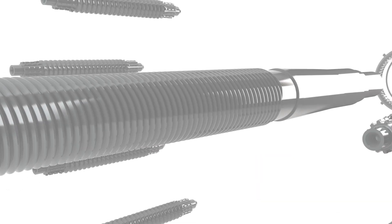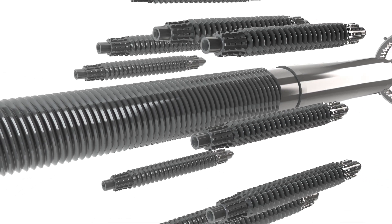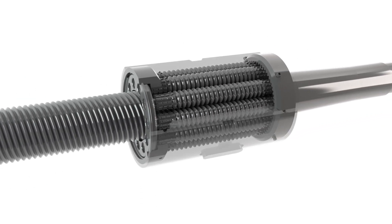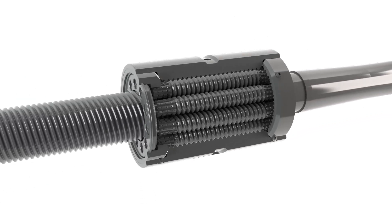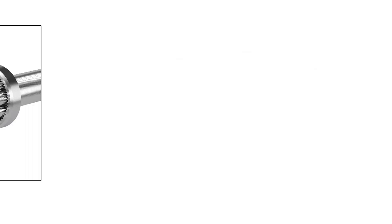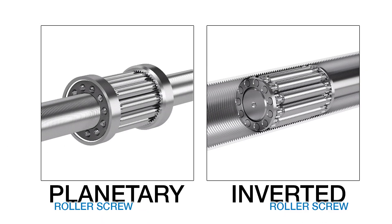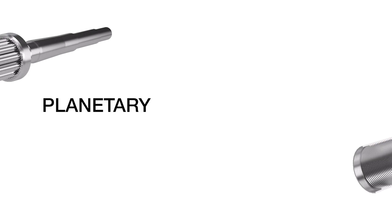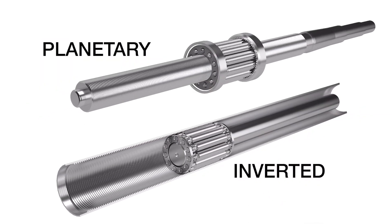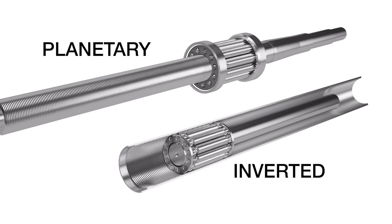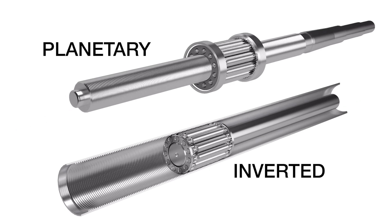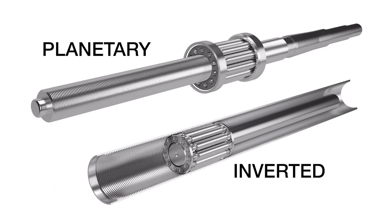The result is that roller screws generally have much longer life than ball screws. There are two types of roller screws: planetary and inverted. Both designs have pros and cons. Inverted roller screws have a more compact size than planetary roller screws, while planetary roller screws have higher life and DLR ratings.